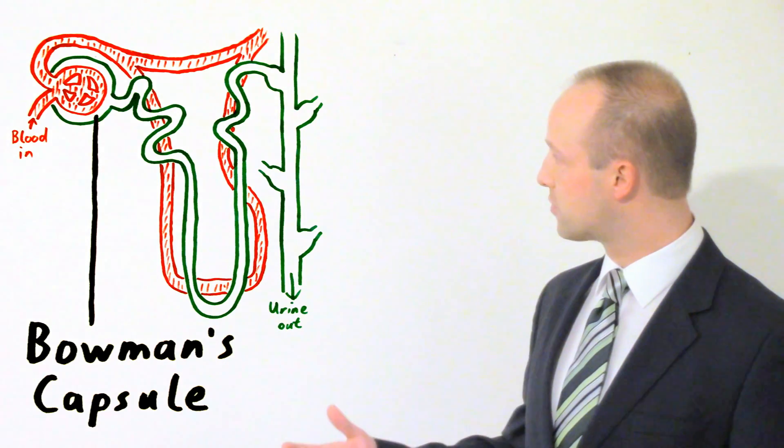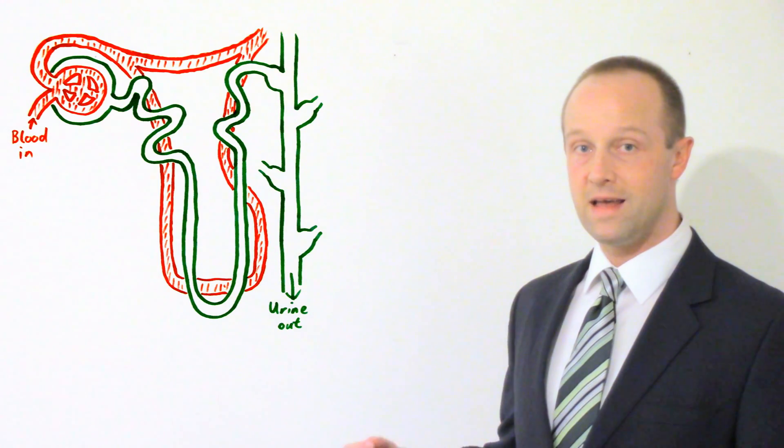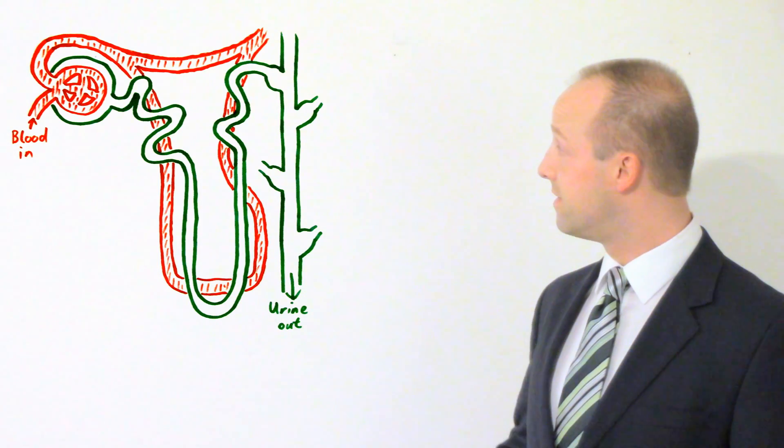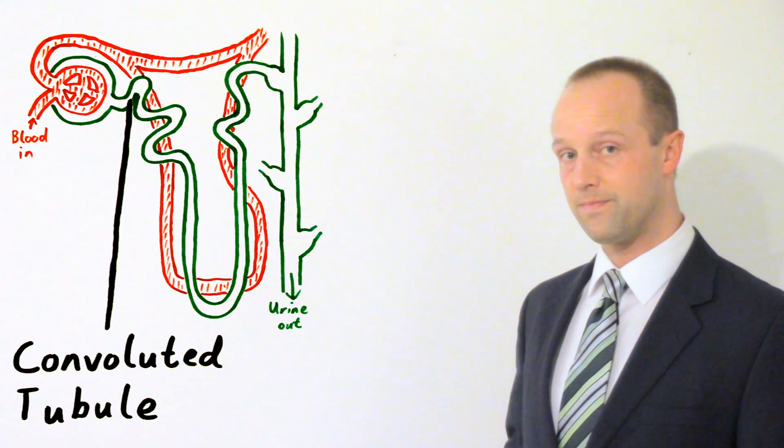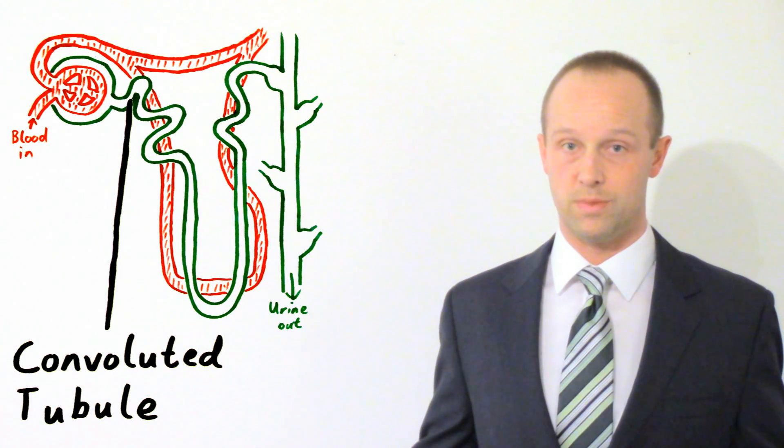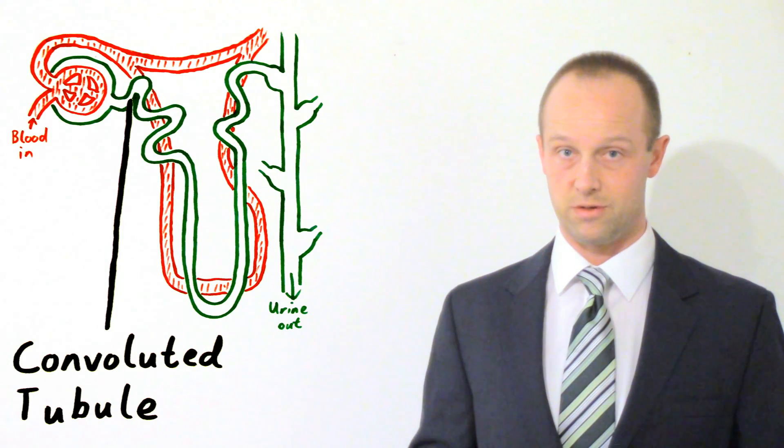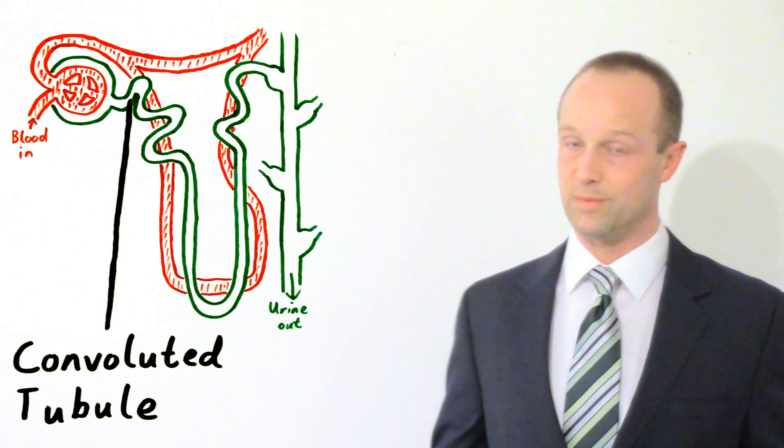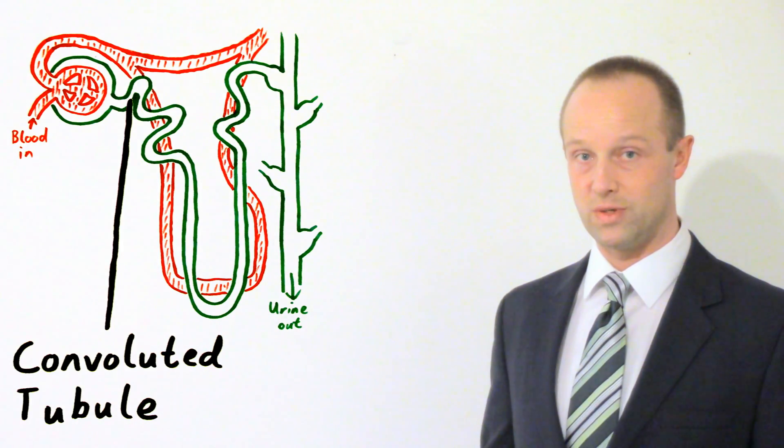So we've got a filtrate in Bowman's capsule. From here it then passes along this thing called the tubule. Tubule just means that it's a tube. It's sometimes actually referred to as the convoluted tubule, which means a twisty tube. As you can see it is quite a twisty tube.